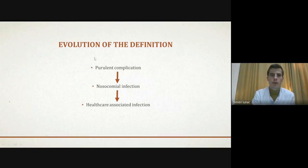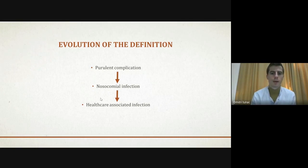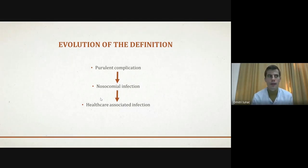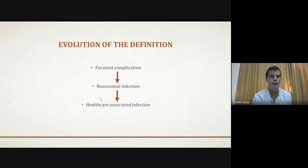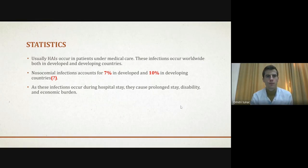So 'purulent complication' was dismissed as a term, and it was replaced by 'nosocomial infection,' literally meaning inter-hospital infection. It became the most popular name for this condition. However, people later argued it was not fair to call it nosocomial because it happens not just in hospital — for example, during home treatment when a doctor or nurse gives ambulatory care, a patient or staff member can also contract an infection. So the term 'healthcare-associated infection' was adopted.